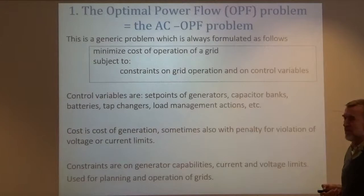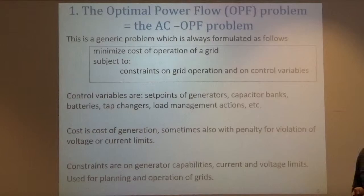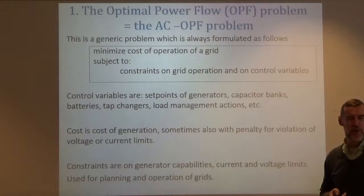From a mathematical viewpoint, it is a very classical problem. We want to minimize the cost of operation of a grid subject to the physical constraints that are due to the physics of the grid, due to the fact that we have an AC grid primarily, and also limits on what we can do with the devices that control the grid.